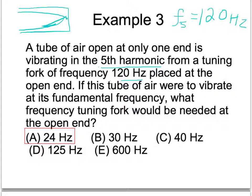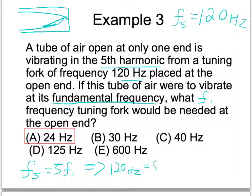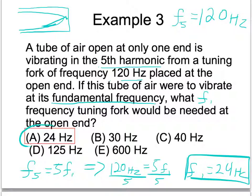If this tube of air were to vibrate at its fundamental frequency F1, what frequency tuning fork would be needed? F5 is just five times F1 — whatever harmonic you're at is that many times the fundamental. So 120 hertz equals 5 times F1. Dividing both sides by 5 gives F1 equals 24 hertz.